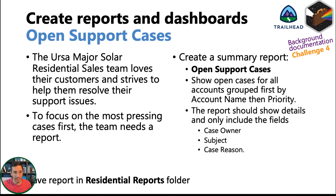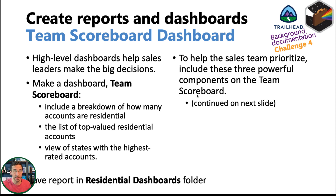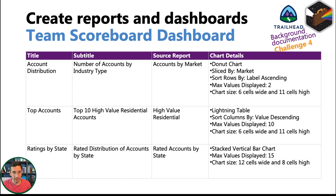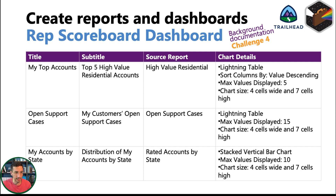Then you have to create the open support cases report. Now onto the residential dashboards — you're going to create a new folder called 'Residential Dashboards,' then create the Team Scoreboard dashboard based on these requirements, including specific component types. This is nice because it tells you the source report, unlike the Lightning Reports and Dashboards Superbadge where you have to figure that out yourself. Then create the Rep Scoreboard dashboard with its required components. All of this is part of challenge four. Make sure you refresh the dashboards before you check the challenge, because sometimes it fails simply because you didn't refresh them.